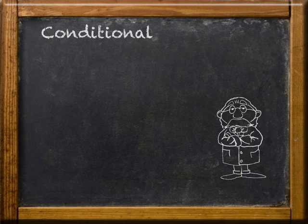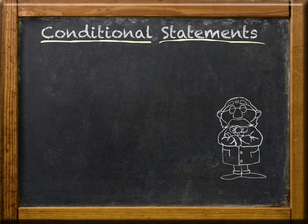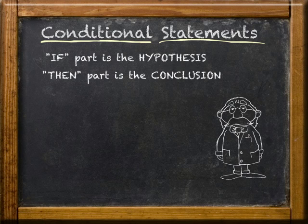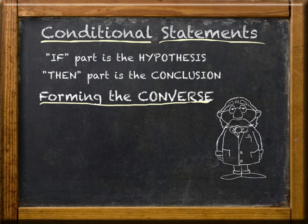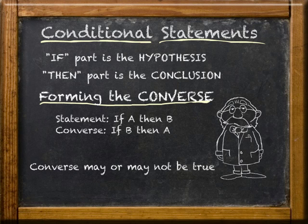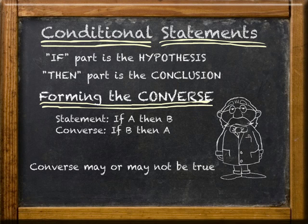So how about a quick summary? We showed that conditional statements have two parts: the hypothesis and conclusion. And if the conditional statement reads 'if A then B,' then the converse would be 'if B then A,' and that converse may or may not be true. So what we're saying is this: geometry uses conditional statements, and from a conditional statement you can form the converse. It works — conditional statements.